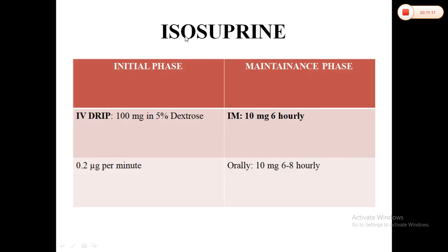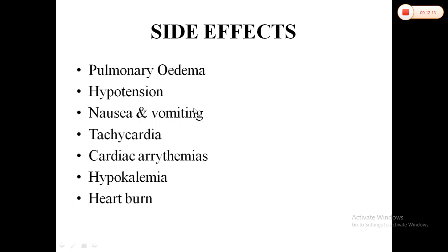Isoprenaline, a beta mimetic drug, has an initial phase and a maintenance phase. In the initial phase, 100 mg is given in 5% dextrose as an IV drip. The maintenance phase involves 10 mg IM to maintain the effect. The IV drip rate is 0.2 micrograms per minute via infusion pump. After stabilization, the patient is switched to oral tablets.